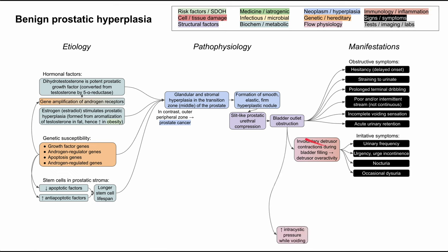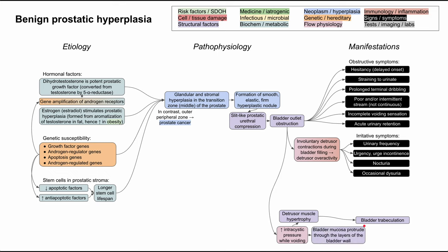As you have bladder outlet obstruction, you'll have increased intravesical pressures. This leads to a buildup of the detrusor muscle — detrusor muscle hypertrophy. This results in bladder trabeculations, where the muscle gets bigger and grows inward, visible on cystoscope exam. In addition, the high pressures during voiding can lead to the bladder mucosa protruding through the layers of the bladder wall, creating pseudodiverticula, because the pressures are so high from the bladder outlet obstruction.